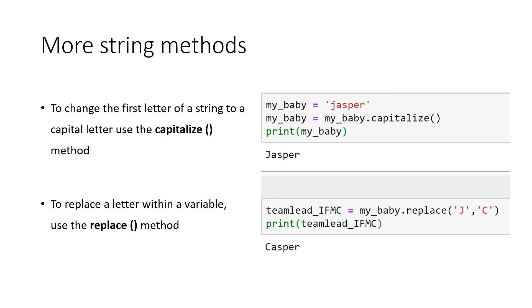There are also methods that you can apply to strings. So here in our example, we have the capitalize method and the replace method. And they obviously only make sense if we apply them to a string, because you cannot really capitalize an integer or a float. So here we have our variable, my_baby with a string, jasper, and then we apply our capitalize method onto our variable, and the result or the output will be jasper only capitalized. So with capitalize, you can capitalize the first letter, obviously.